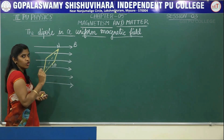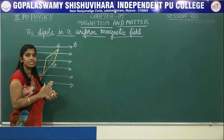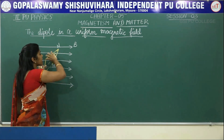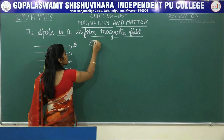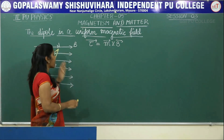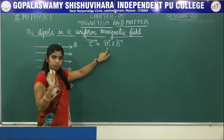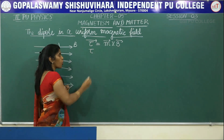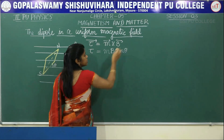As we all know, the magnetic dipole placed in a magnetic field always experiences a torque. So the magnetic needle is experiencing a torque which makes it align in the direction of the magnetic field. The torque is given by the formula M cross B, where M is the magnetic moment and B is the applied magnetic field. The magnitude of the torque is equal to MB sin theta.